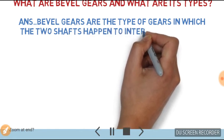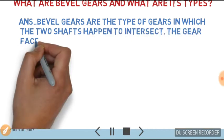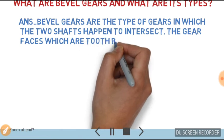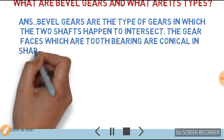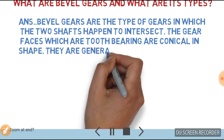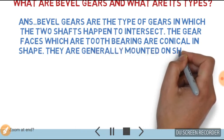The gear faces which are tooth-bearing are conical in shape. They are generally mounted on shafts which are 90 degrees apart.